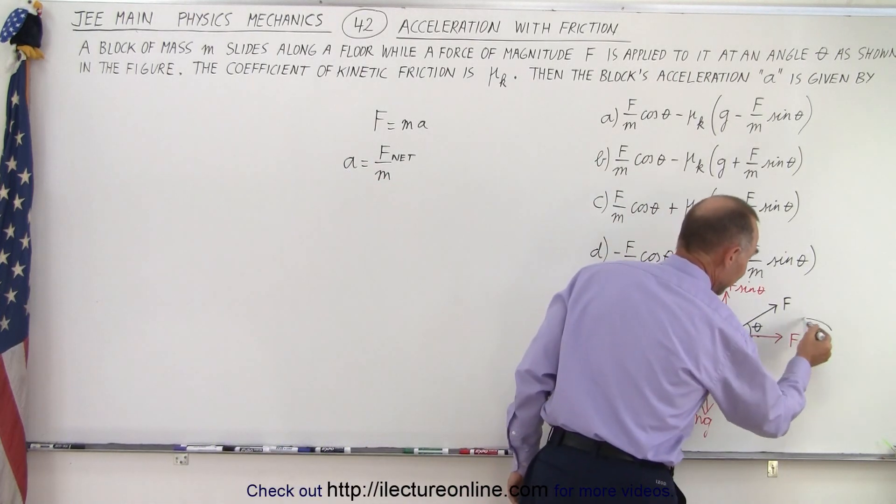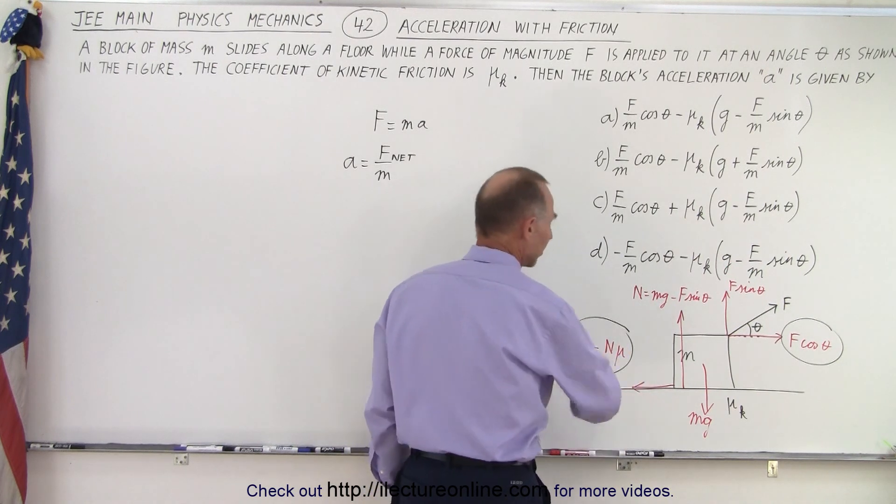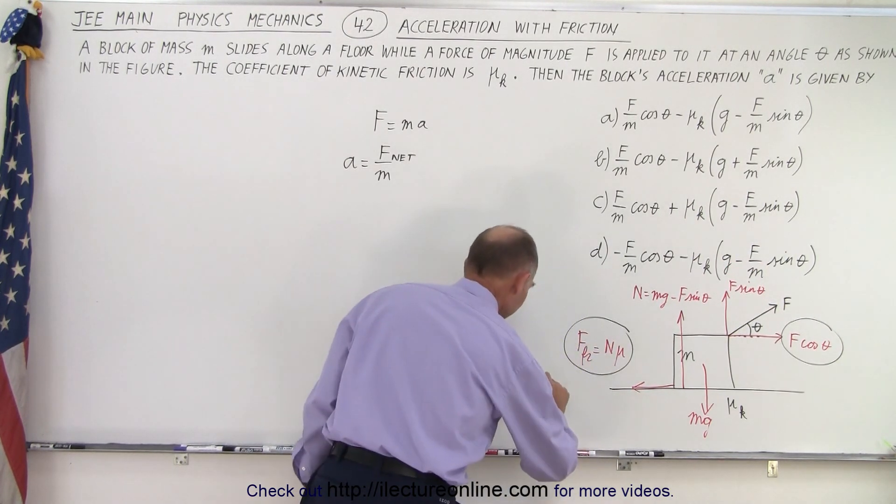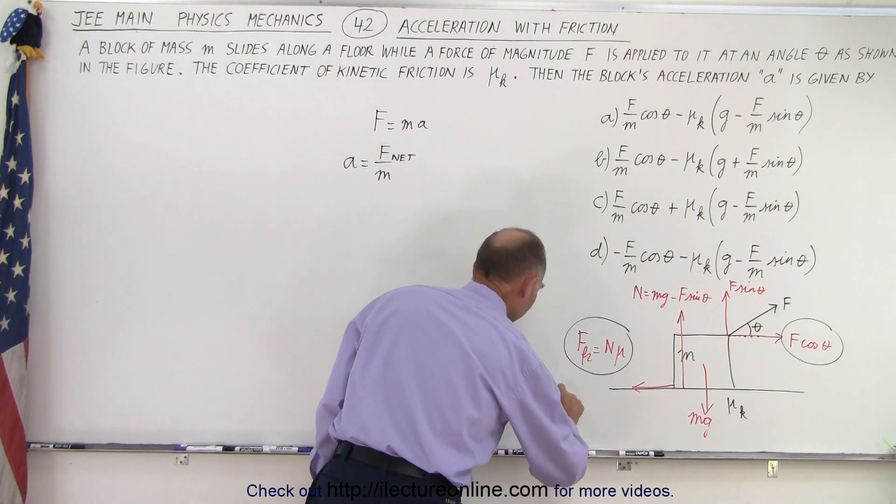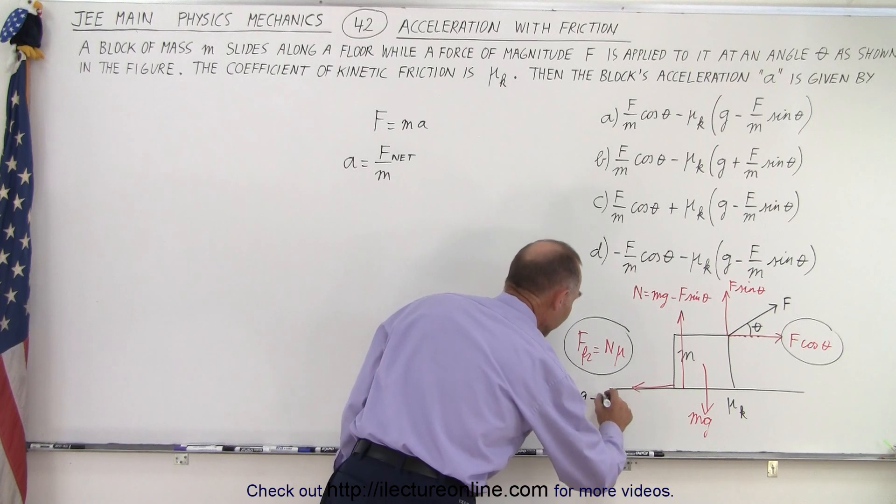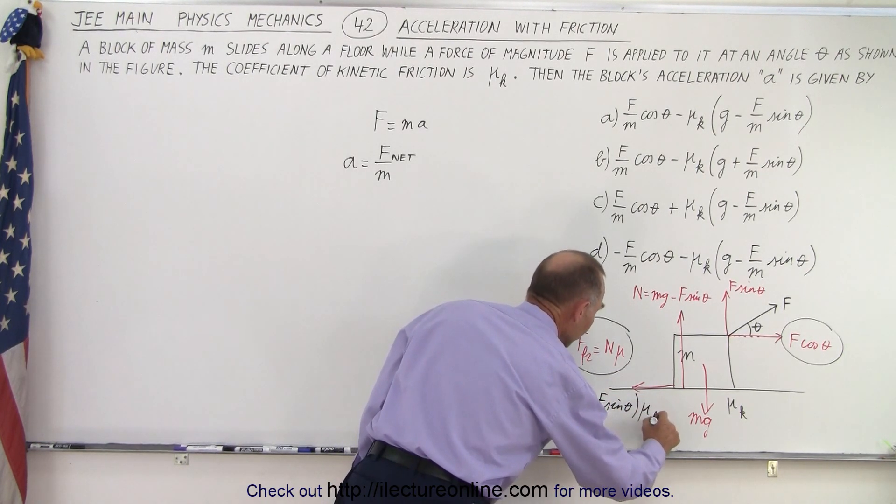Now this force here is aiding the acceleration and this force here is opposing the acceleration. And notice that if we replace n by this, we can say that the friction force is therefore equal to (mg minus F sin θ) times μ_k.